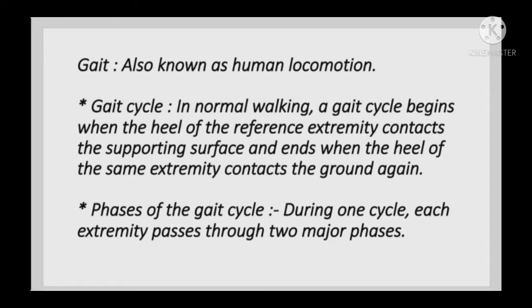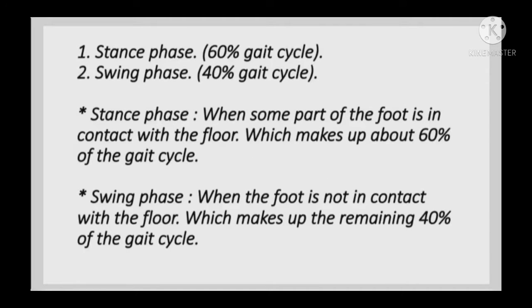During one gait cycle, each extremity passes through two major phases. The first is the stance phase, which makes up about 60% of the gait cycle. The second is the swing phase, which makes up about 40% of the gait cycle. The stance phase is defined as when some part of the foot is in contact with the floor.